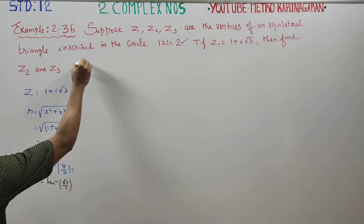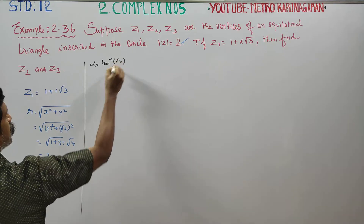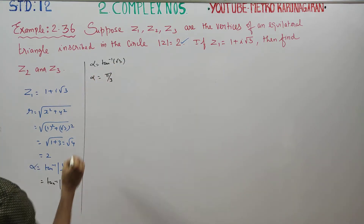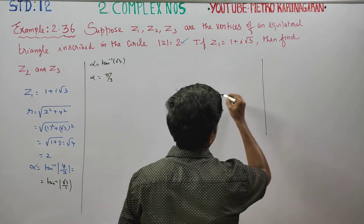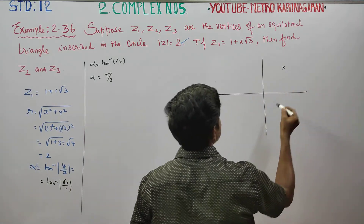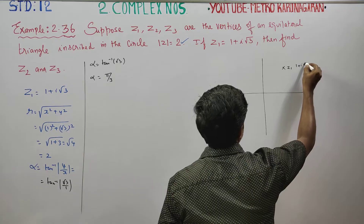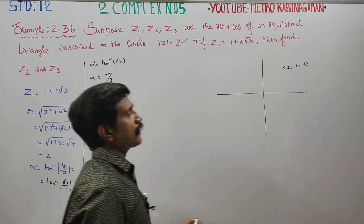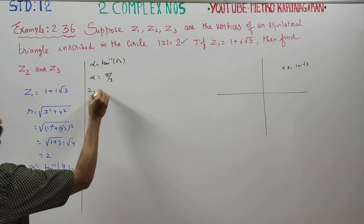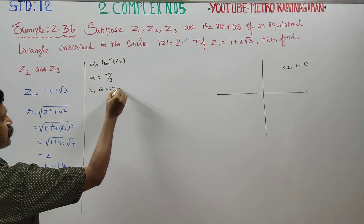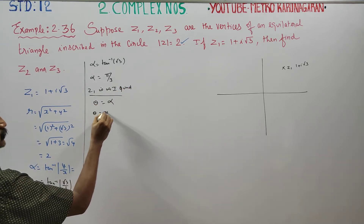Root 3 is a positive value. Alpha is equal to tan inverse of root 3. Root 3 gives 60 degrees, which is pi by 3. Since 1 plus i root 3 is in the first quadrant — both real and imaginary parts are positive — the argument of z1 is pi by 3.